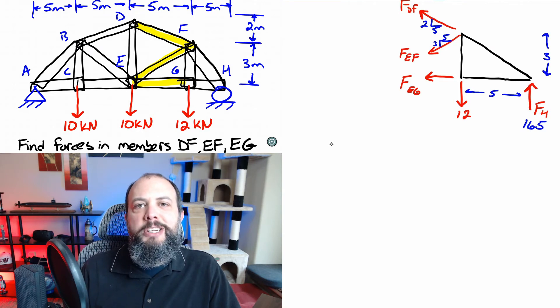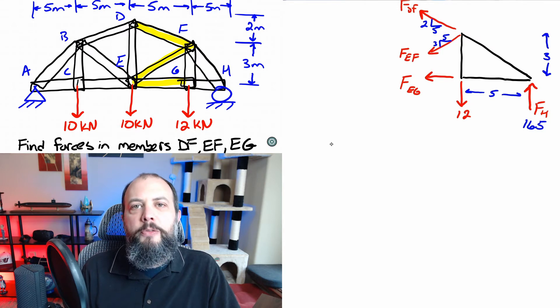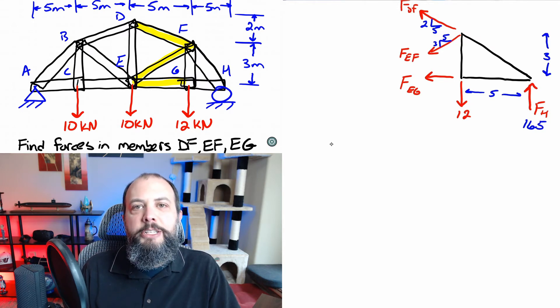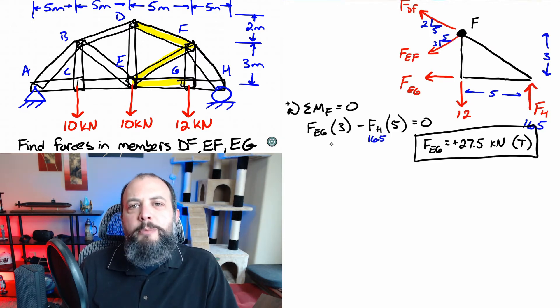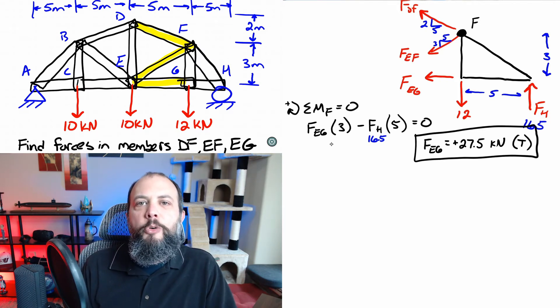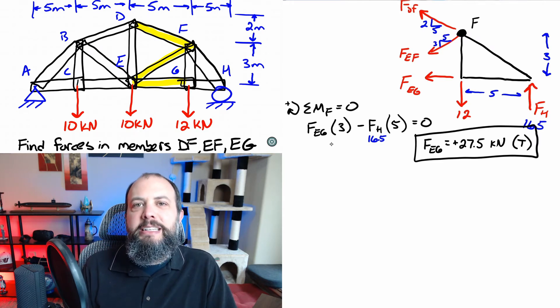The easiest one to solve right away is going to be by doing a sum of moments at point F to cancel out the two diagonal forces and find FEG right away. So summing moments at point F cancels out the two diagonal forces allowing us to solve for FEG as 27.5 kilonewtons. I put a T in parentheses there to show that it is in tension.